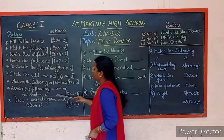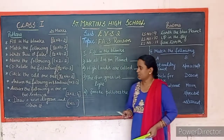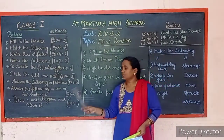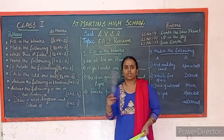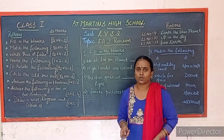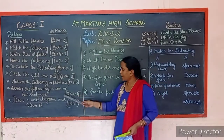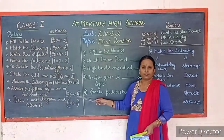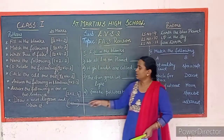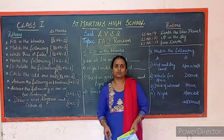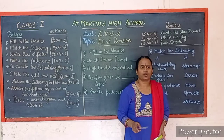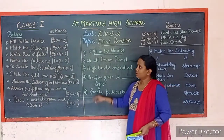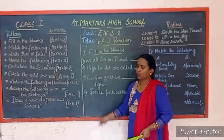Answer the following in 2 sentences: you will have 2 questions, each carrying 2 marks — total 4 marks. The last section is draw a diagram, for which you will get 1 mark. So the total marks you will have is 20 marks. This is the pattern of the question paper, children.